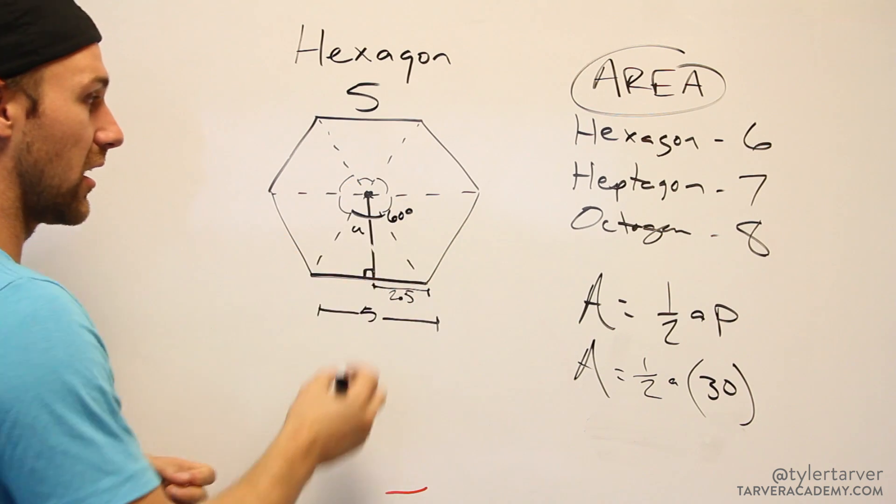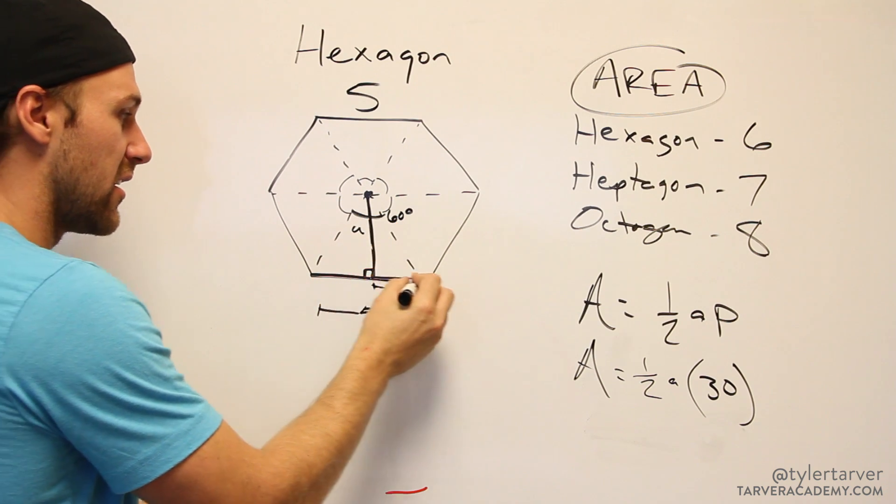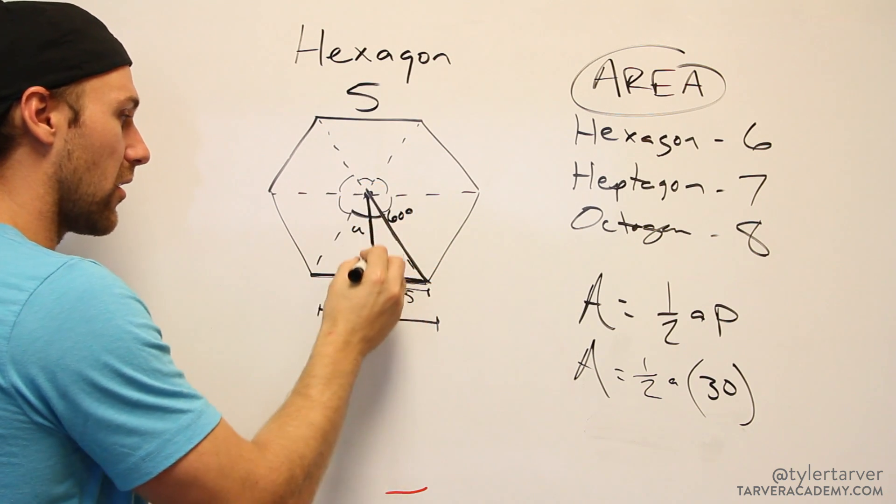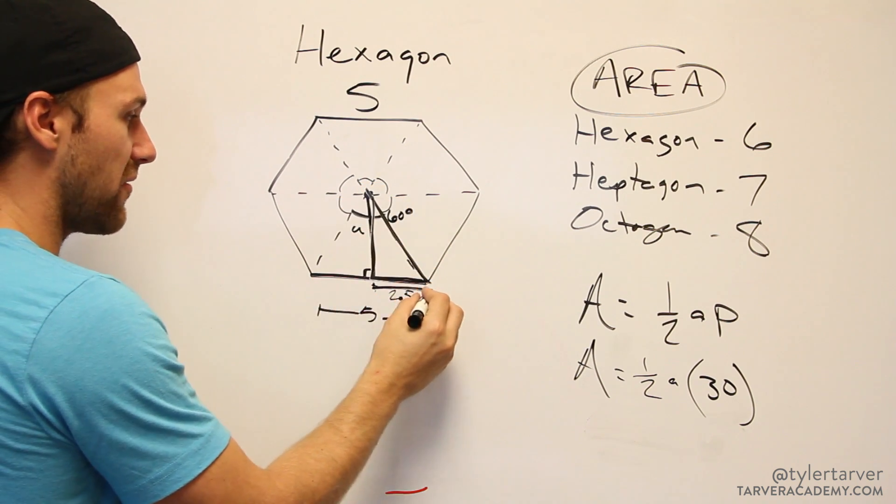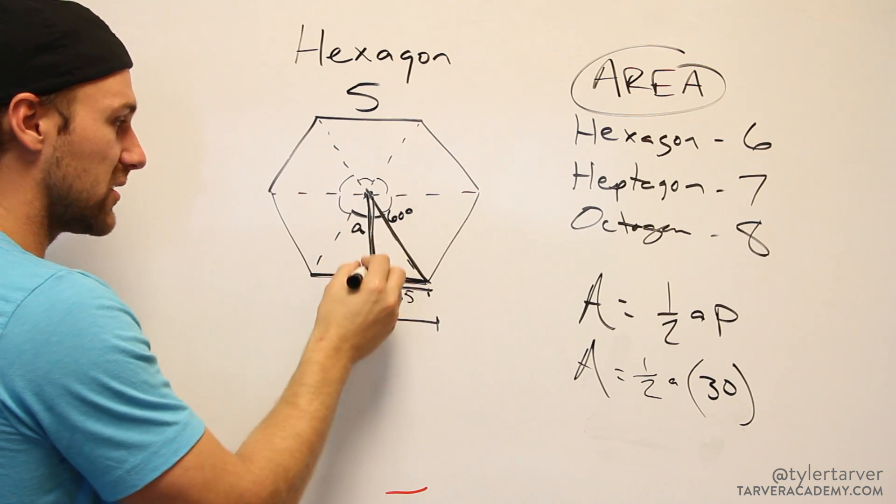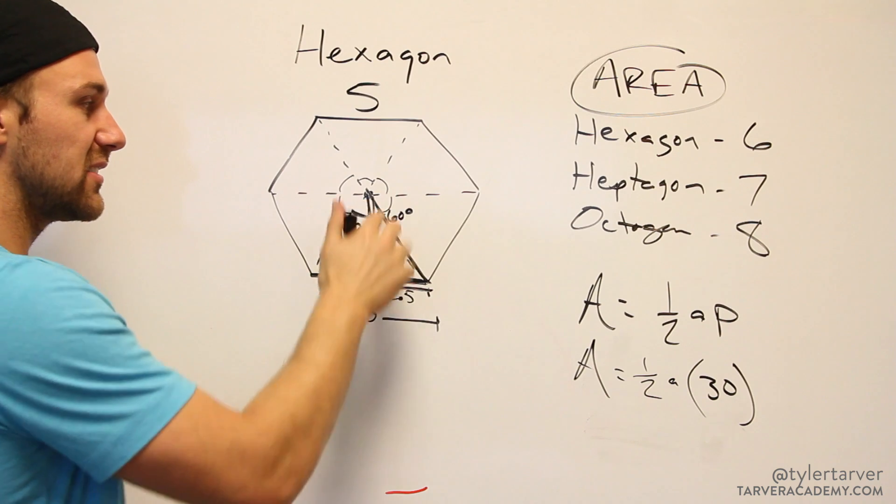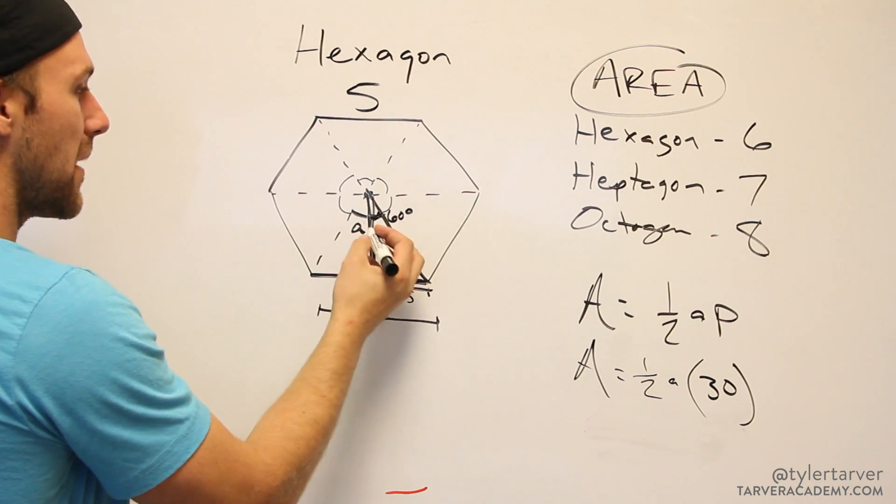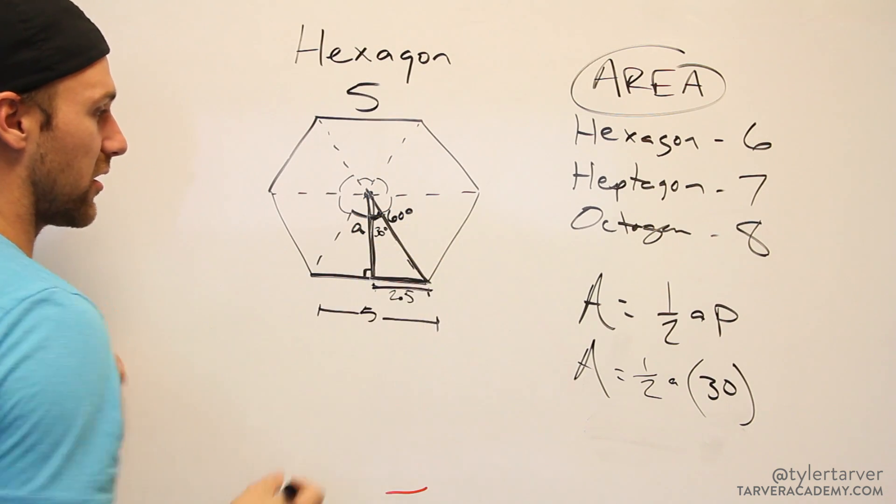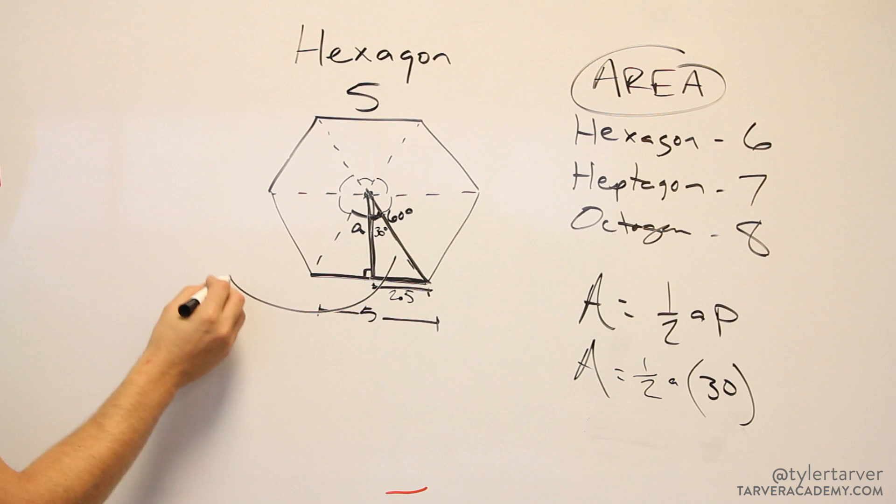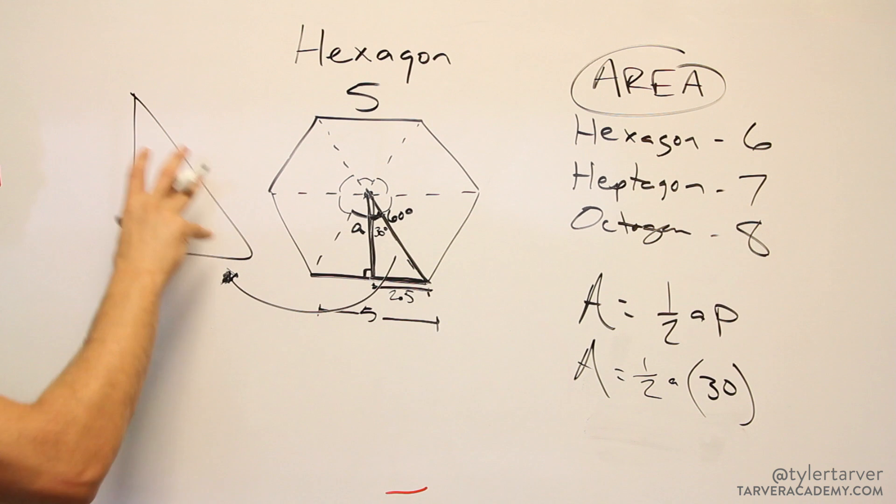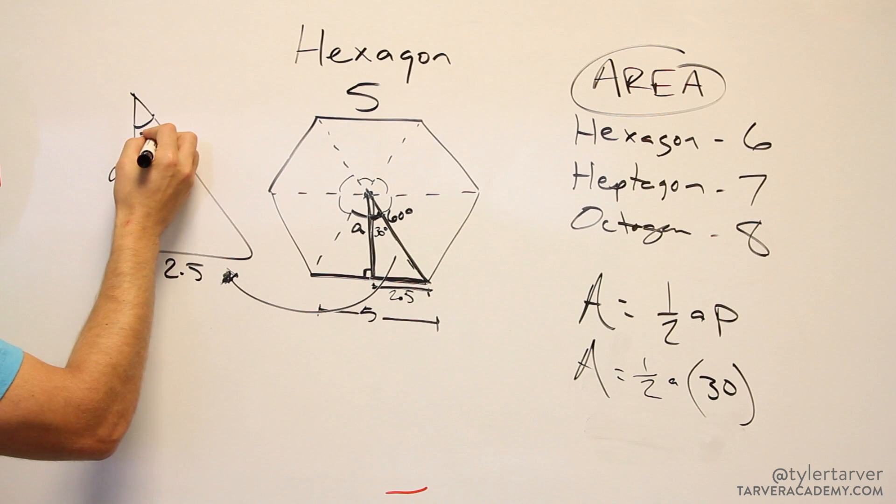Do I need that whole 60 degree angle? No, I just need this triangle right here. That's why I only need 2.5. I know my apothem a is one side of my triangle. Now I know this angle - if that whole thing is 60, and I'm cutting that in half, that means that angle has to be 30 degrees. If you don't mind, I would like to transport this triangle over here. I'm just gonna make it bigger so we can see what we know. We know apothem's there, we know that's 2.5, and we know this is 30 degrees.